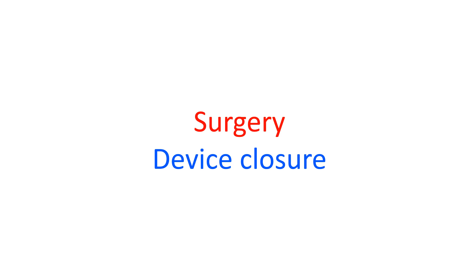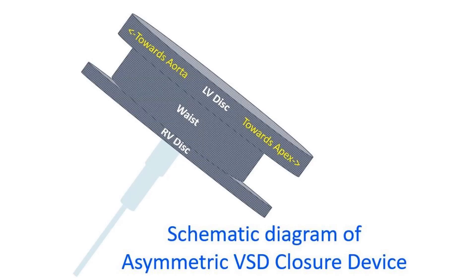Perimembranous VSD that remains large may need to be closed by surgery early in life. Device closure for perimembranous VSD is evolving and is not as popular as device closure of muscular VSD, because it can sometimes cause an atrioventricular block. Special asymmetrical VSD closure devices are used to avoid pressure by the device in the region of the conduction system, which is near the rim of the VSD.